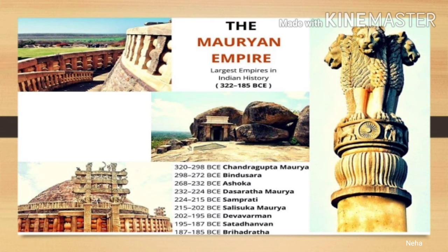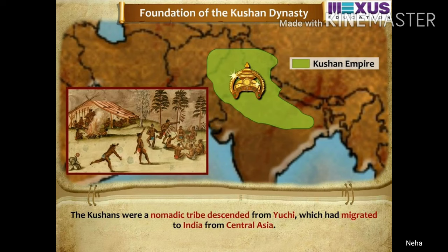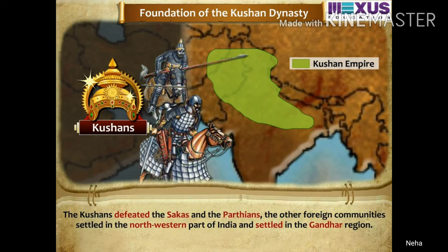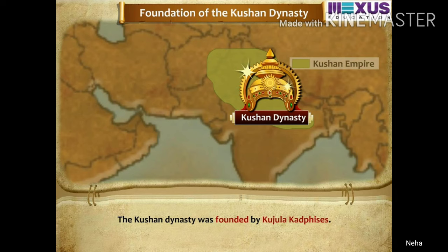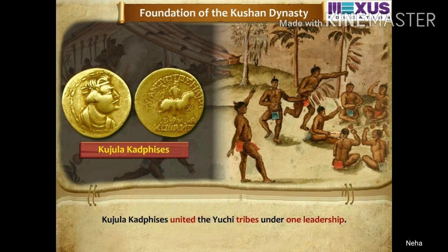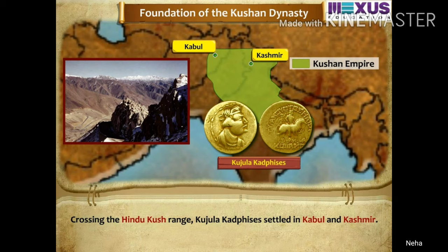Now let's study about the Kushans — an important dynasty of India. They were basically from a nomadic tribe which migrated to India from Central Asia. The Kushans defeated the Sakas and the Parthians, and other foreign communities settled in the northwestern part of India in the Gandhara region.